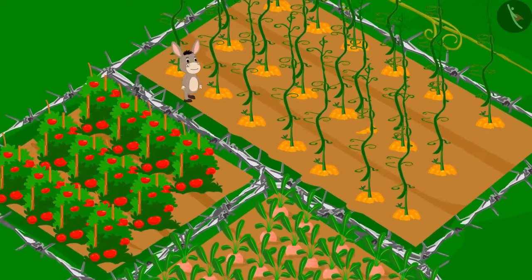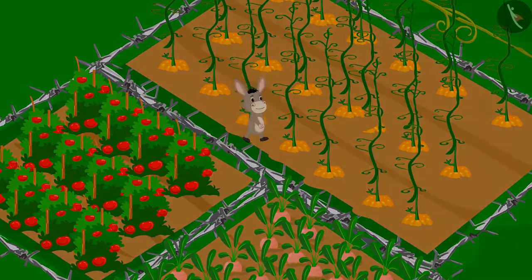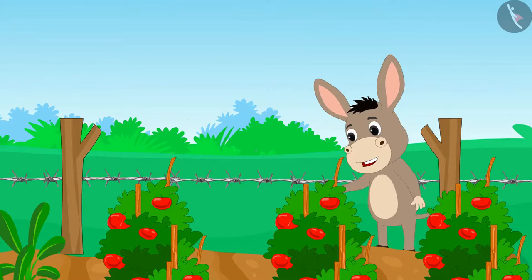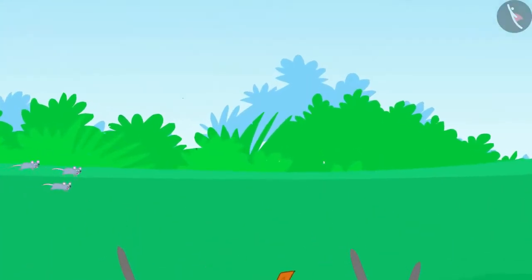Bhola finally put up a barbed wire fence around his farm and those mice never bothered Bhola again.